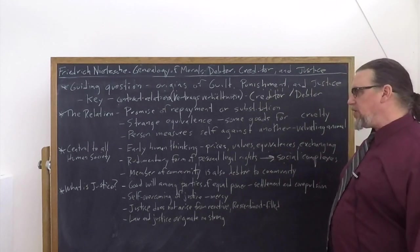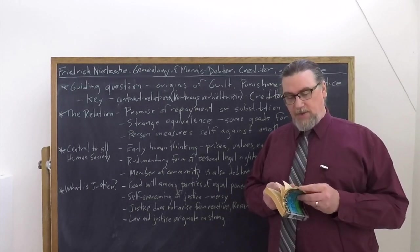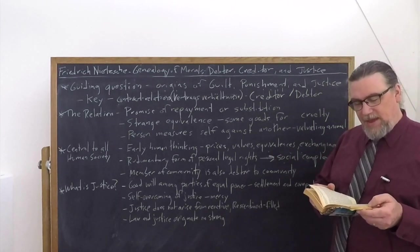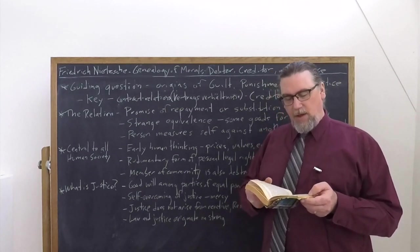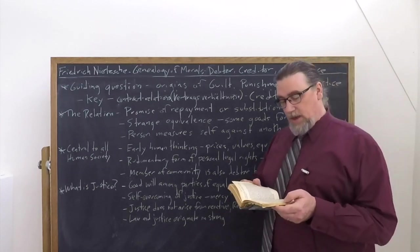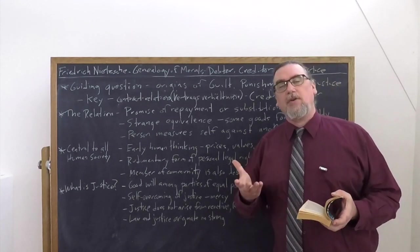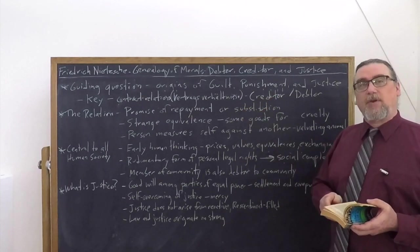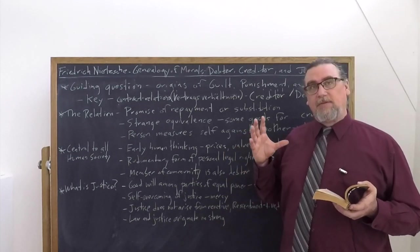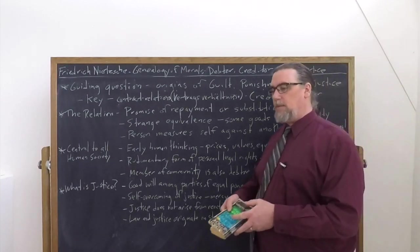So let's talk about justice. Where does this idea of justice come from? We mentioned this already back in section eight, where he said, the oldest and most naivest moral canon of justice, the beginning of all good naturedness. And he says, justice on this elementary level is the goodwill among parties of approximately equal power to come to terms with one another, to reach an understanding, yet another relation. After the relation has been violated, justice means establishing a new relation, an understanding by means of a settlement. And there's another part to this, to compel parties of lesser power to reach a settlement among themselves.